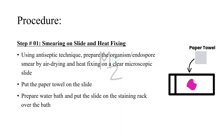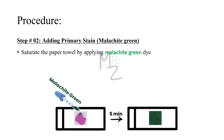Step one — smearing on slide and heat fixing: we'll use an aseptic technique to prepare the endospore smear by air drying and then heat fixing it on a clear microscopic slide. Then we'll put a paper towel on the slide to absorb excess liquid, help with drying, allow proper handling of the slide, and prevent contamination. We'll prepare the water bath and place the slide on the staining rack. Step two — adding the primary stain, malachite green: we'll saturate the paper towel by applying malachite green and leave it for five minutes.